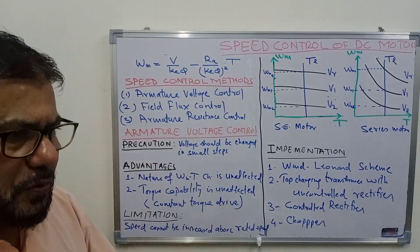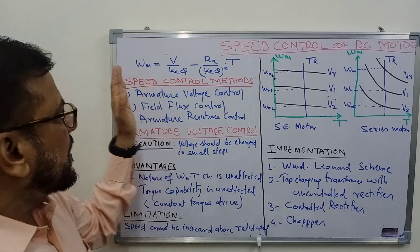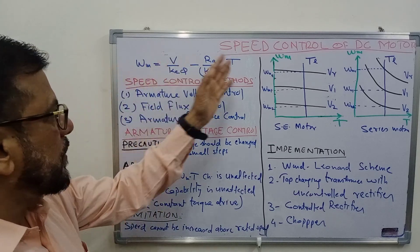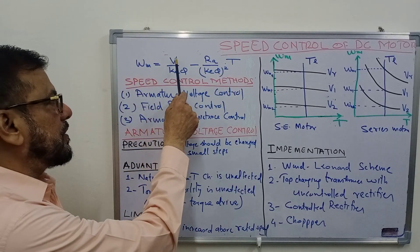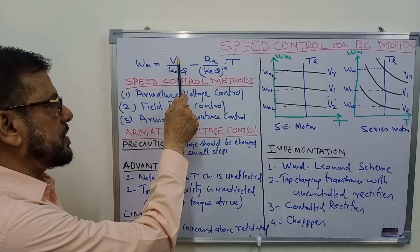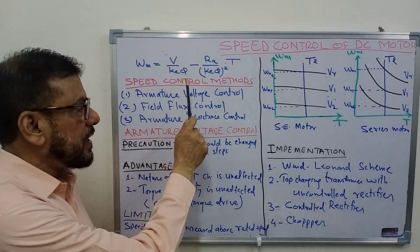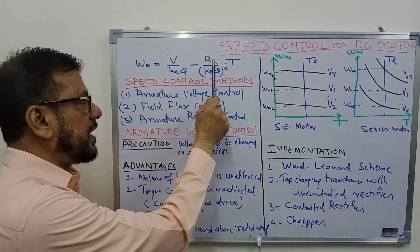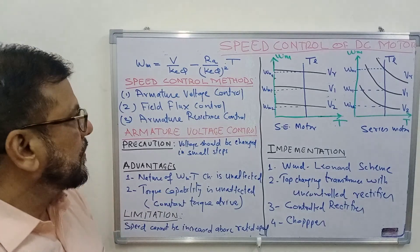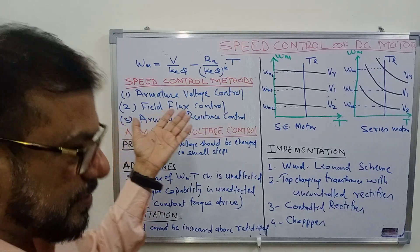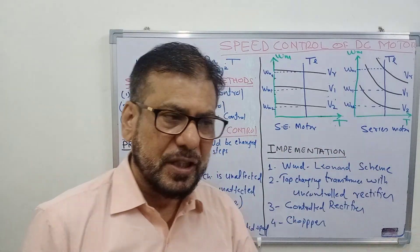Recall the equation we discussed earlier relating speed and torque. Speed depends on voltage, the flux produced by the field winding, and the armature circuit resistance. So obviously there are three methods that you can think of.